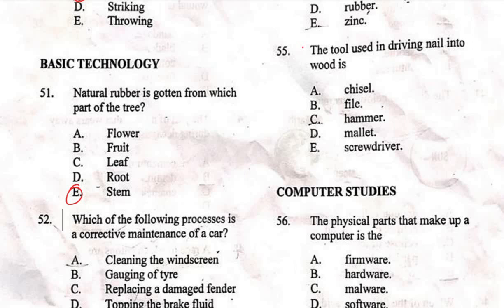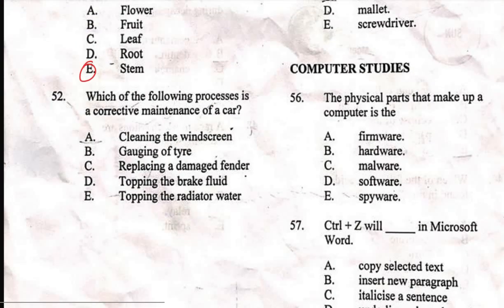Question 52 says: 'Which of the following processes is a corrective maintenance of a car?' Options are: A) cleaning the windscreen, B) gauging of tire, C) replacing a damaged fender, D) topping the brake fluid, E) topping the radiator water. The correct answer is C — replacing a damaged fender is a corrective maintenance of a car.